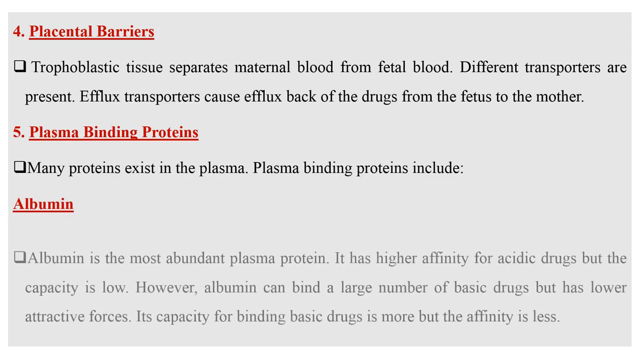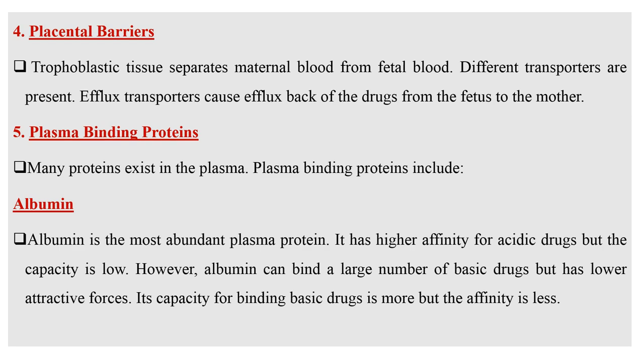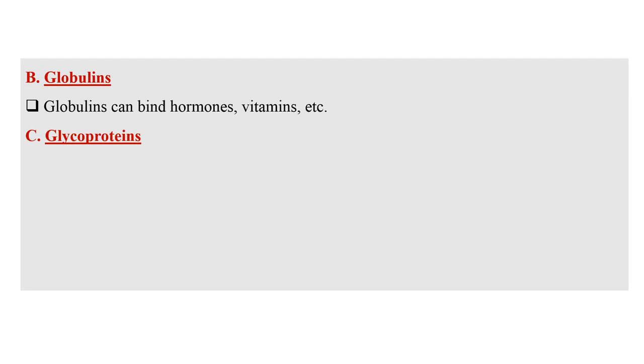Another important parameter is plasma protein binding. Many proteins exist in the plasma. The most important protein involved in binding is albumin, which is the most abundant plasma protein. It has higher affinity for acidic drugs but lower capacity. Albumin can also bind a large number of basic drugs but with lower attractive forces — its capacity for binding basic drugs is more but affinity is less. Globulin can bind hormones, vitamins, etc.